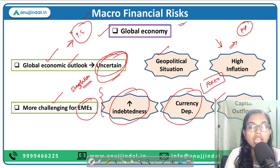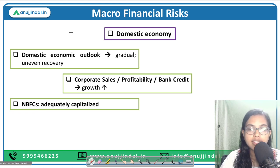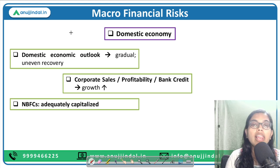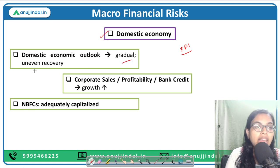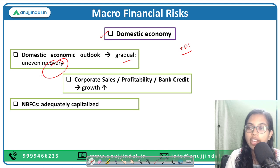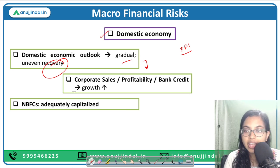Moving on to the domestic economy: despite the geopolitical tensions from the Russia-Ukraine war, elevated crude oil prices, and the volatility seen through FII exits from India, the domestic indicators show a gradual however uneven strengthening recovery for India.